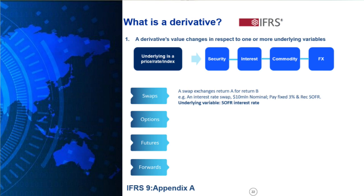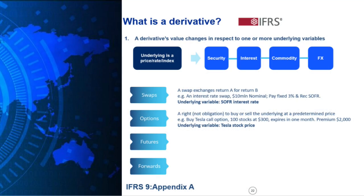In this case the underlying variable is SOFR. When it comes to options, options are the right but not the obligation to buy or sell an underlying at a predetermined price. For example, buy a Tesla call option with a notional of 100 stocks at a predetermined price of $300 expiring in one month's time. For this right to buy Tesla at this price we pay a premium of $2,000. The underlying variable here is the Tesla stock price.